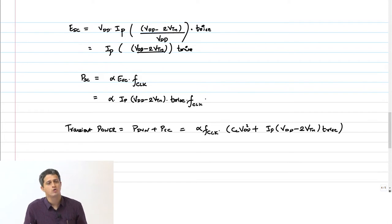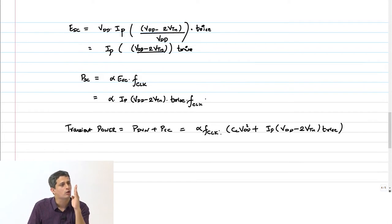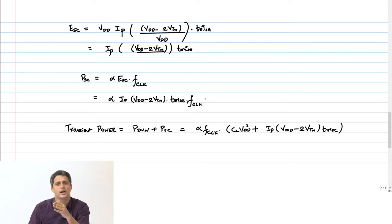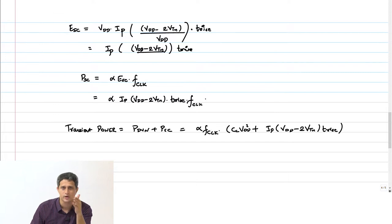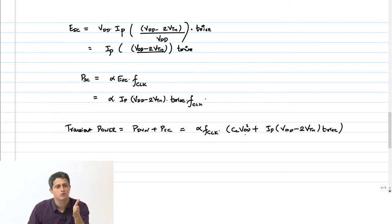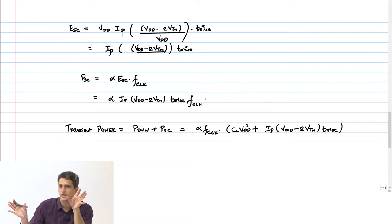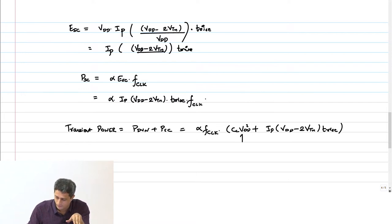Now, if I want to reduce the total transient power, one way is to reduce VDD — VDD squared will reduce, dynamic power will come down. Dynamic power is going to be the dominant component of transient power compared to short circuit power.